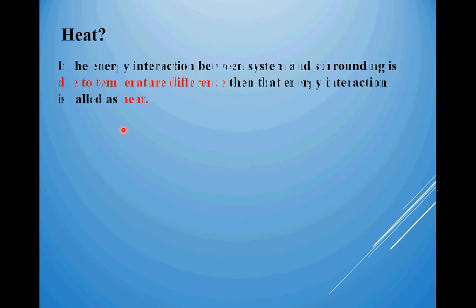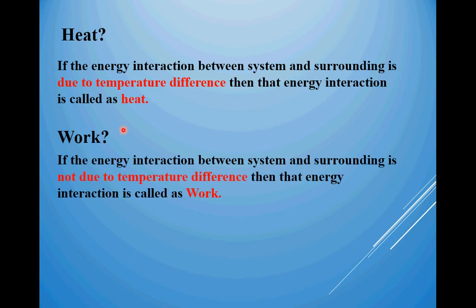Before going to types of work let us have a quick revision regarding heat and work. As per definition, if the energy interaction between system and surroundings is due to temperature difference, then the energy interaction is called as heat. The definition says if the energy interaction between system and surrounding is not due to temperature difference, then the energy interaction is called as work. So this is the basic difference between heat and work. Now let us understand various types of works.